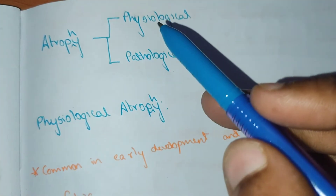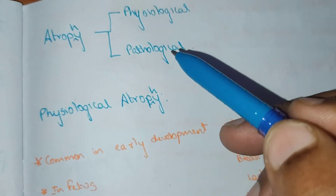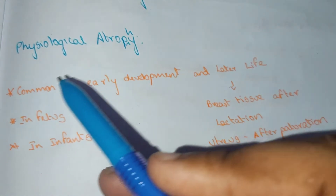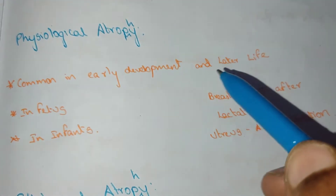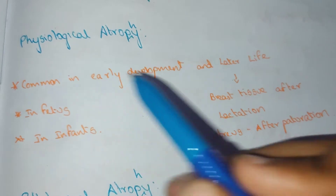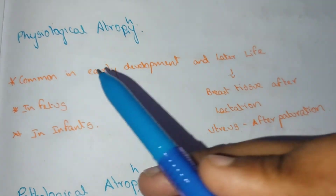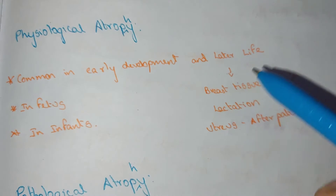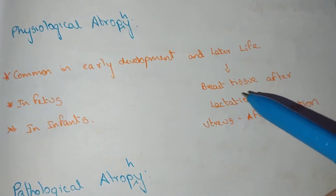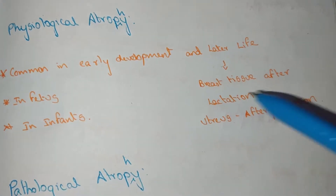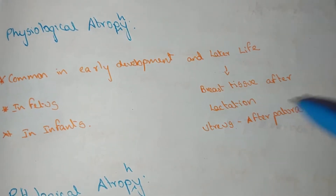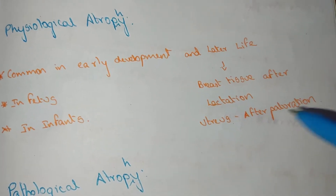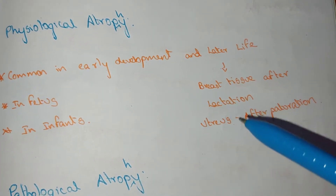Atrophy can be physiological or pathological. Physiological atrophy is common in early development and later life — for example, in fetuses during early development, breast tissue after lactation, and the uterus after parturition (delivery).